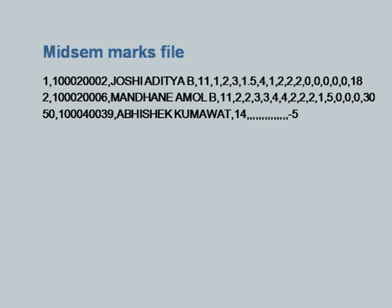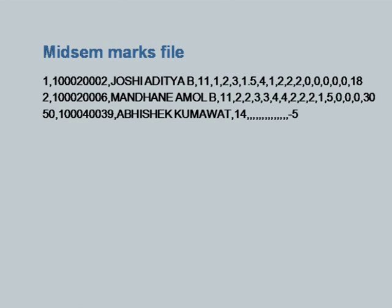These are called comma separated values or comma separated fields. The first field is the serial number - 1, 2, 3, 4, 50, etc. The next field is roll number and the next field is name. Notice that our notion of reading data from input uses the CIN statement, which is able to read numerical values or strings that do not contain a space. We do not know how to read a name like 'Joshi Aditya B' or 'Abhishek Kumavat' when there is a blank within the string.